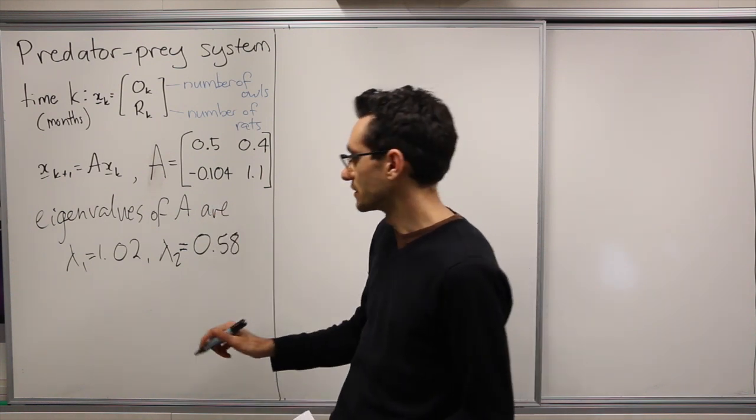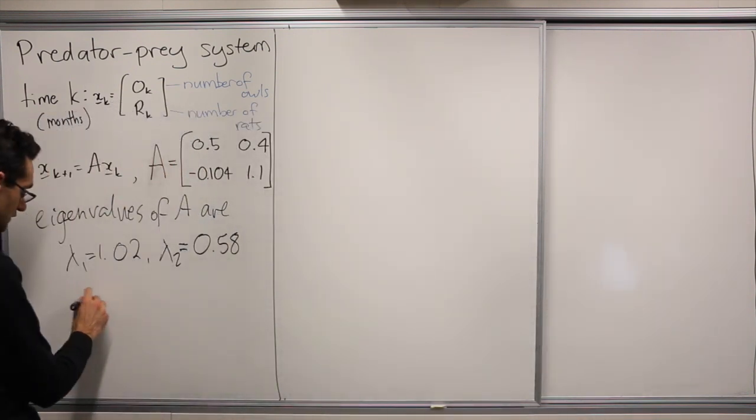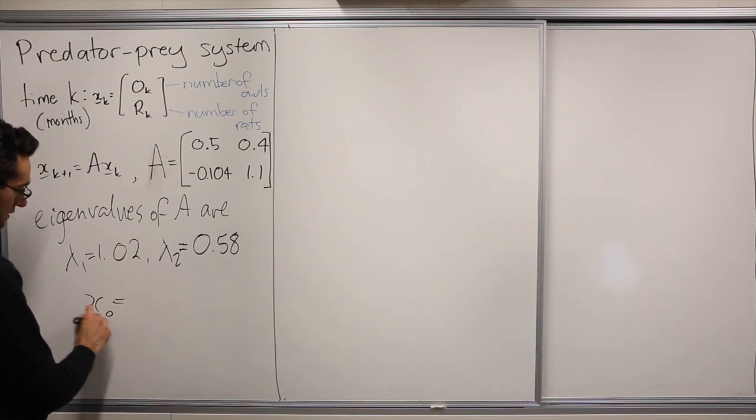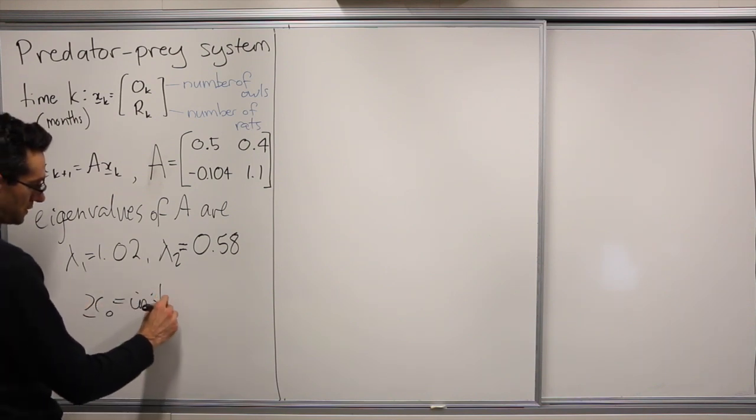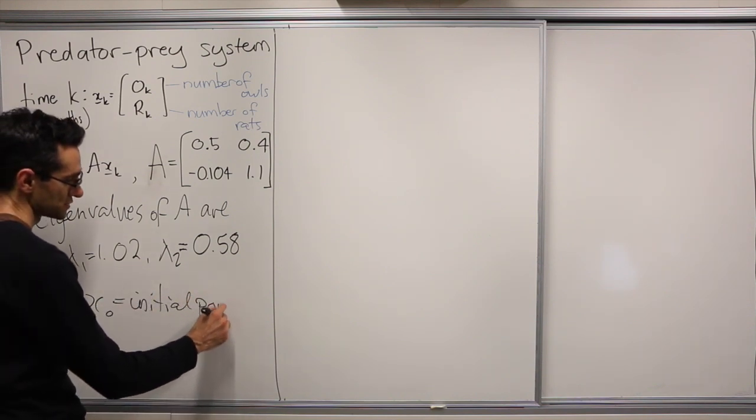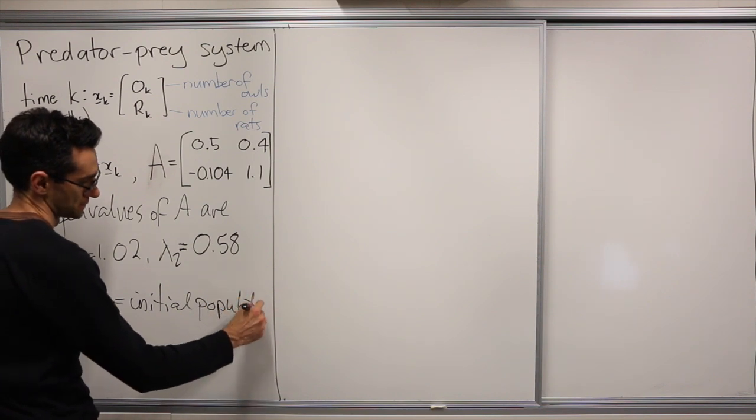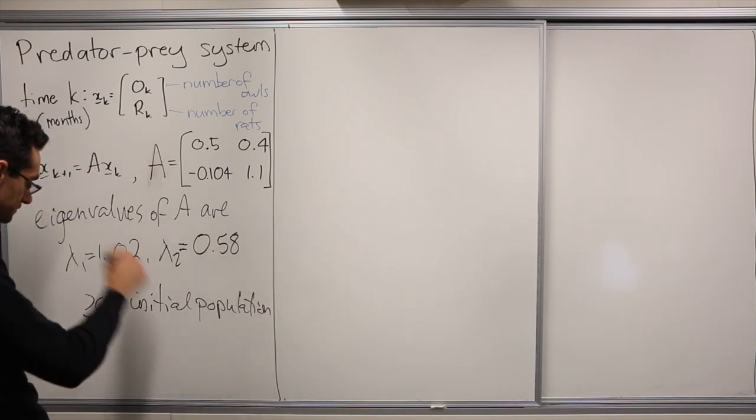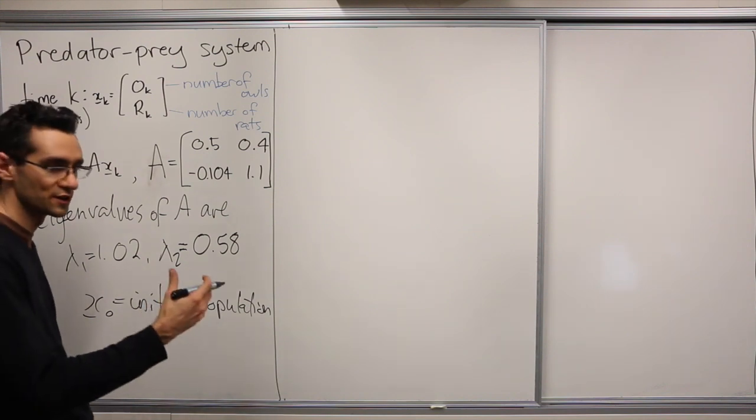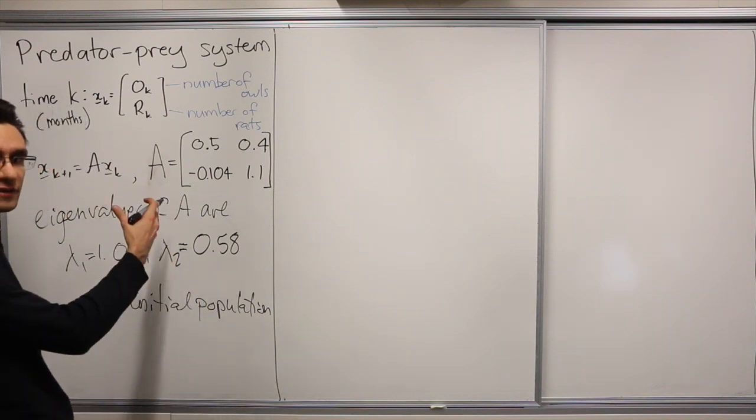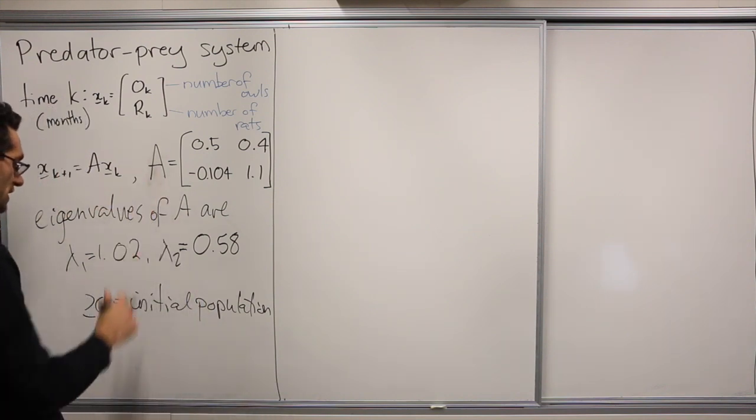So we can write any x0. Let's say x0 is our initial population. x0 equals initial population, and then we want to write this in terms of the basis, which is the eigenvectors of A.